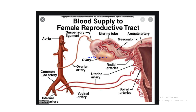The blood supply to the female reproductive organs is shown in this diagram. The main vessel is the aorta, from which the ovarian artery branches. The common iliac artery divides into the external and internal iliac arteries, and from the internal iliac artery the uterine artery takes its pathway toward the uterus. Multiple spiral arteries supply the uterus, with a rich plexus also supplying the fallopian tube and ovary.